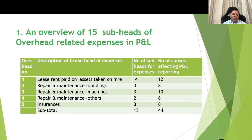This is the overall summary showing, by broad head, the number of subheads of expenses and the number of causes affecting profit and loss reporting. For example, row number 1, lease rent paid on assets taken on hire, has 4 subheads and 12 causes. Repair and maintenance building has 3 subheads and 8 causes, and so on. The total is 15 expense subheads and 44 causes that can adversely affect P&L reporting.